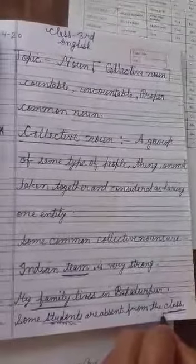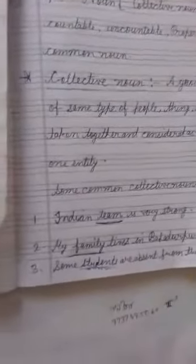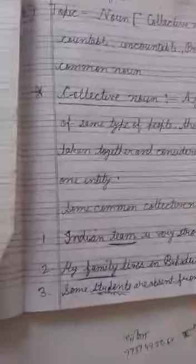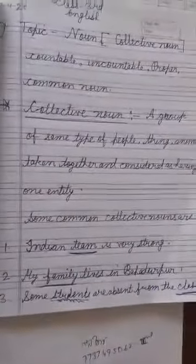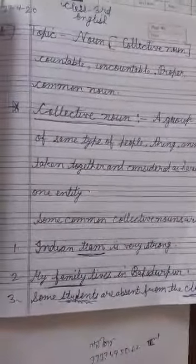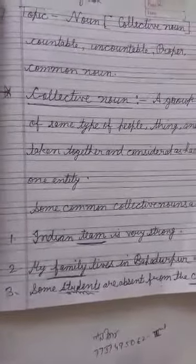Class kya hota hai? A group of students, friends. To aise hi jo group ban jata hai — group means collective. Sab ek jagah ikatthe ho jate hain. Unko hum kya bolte hain? Collective noun. Collective noun means sab ko group bana karke rakhna.